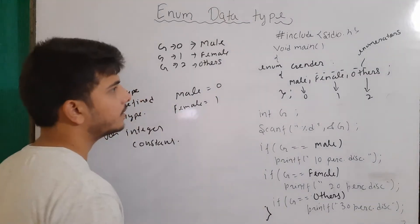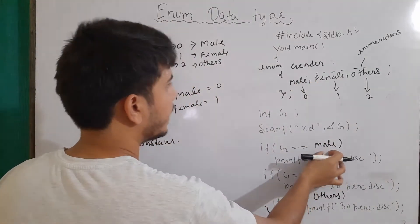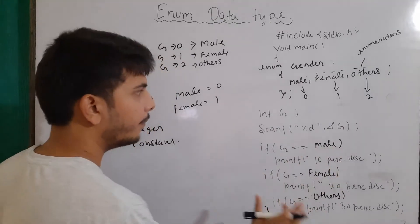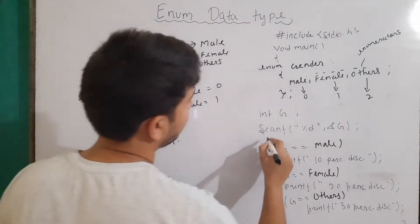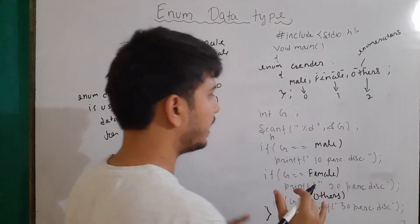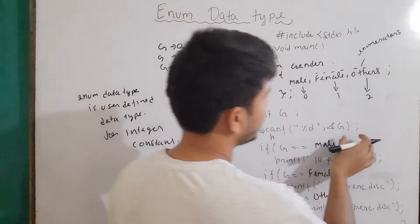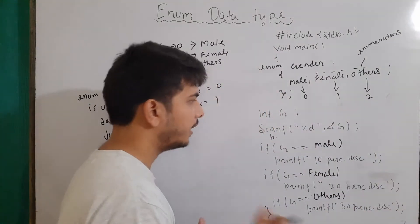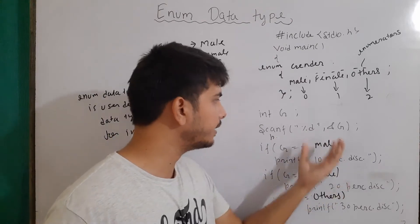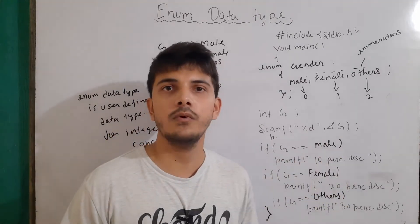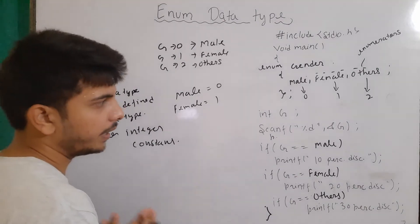Now if someone sees your code, it will be easier for him to understand what is going on. So the role of enum is to just make our program better to understand — it increases the readability of our program. Basically, we can say we replaced zero with male. For end users, you can write a printf like: enter zero for male, enter one for female, enter two for others. But for other programmers who want to quickly see the logic of your program, it will be much easier for them to interpret.